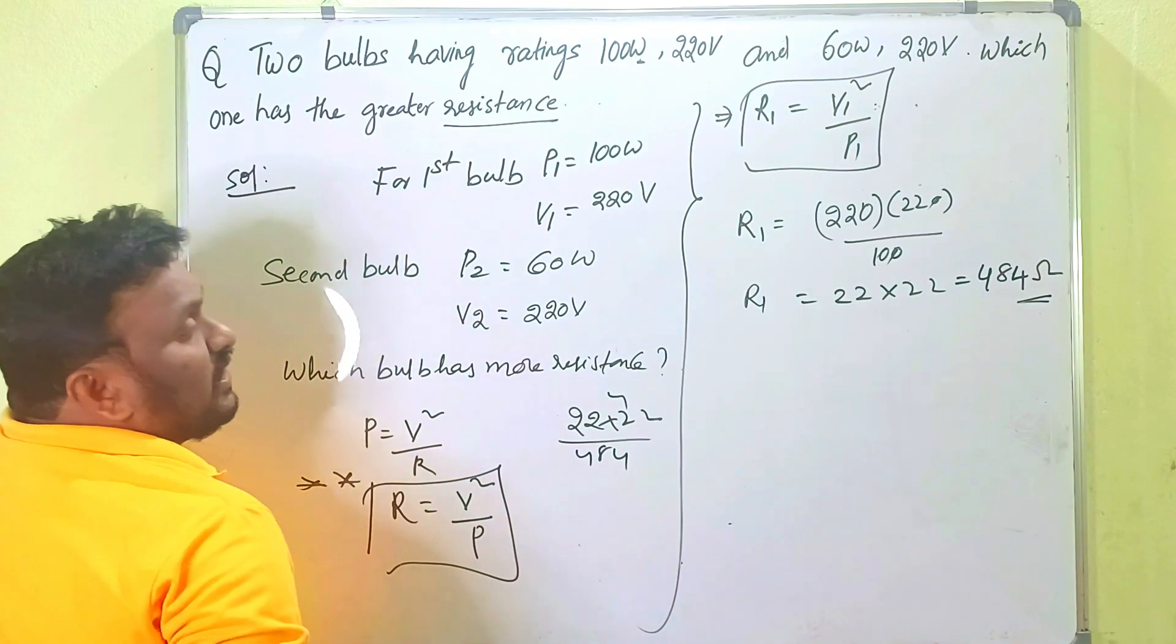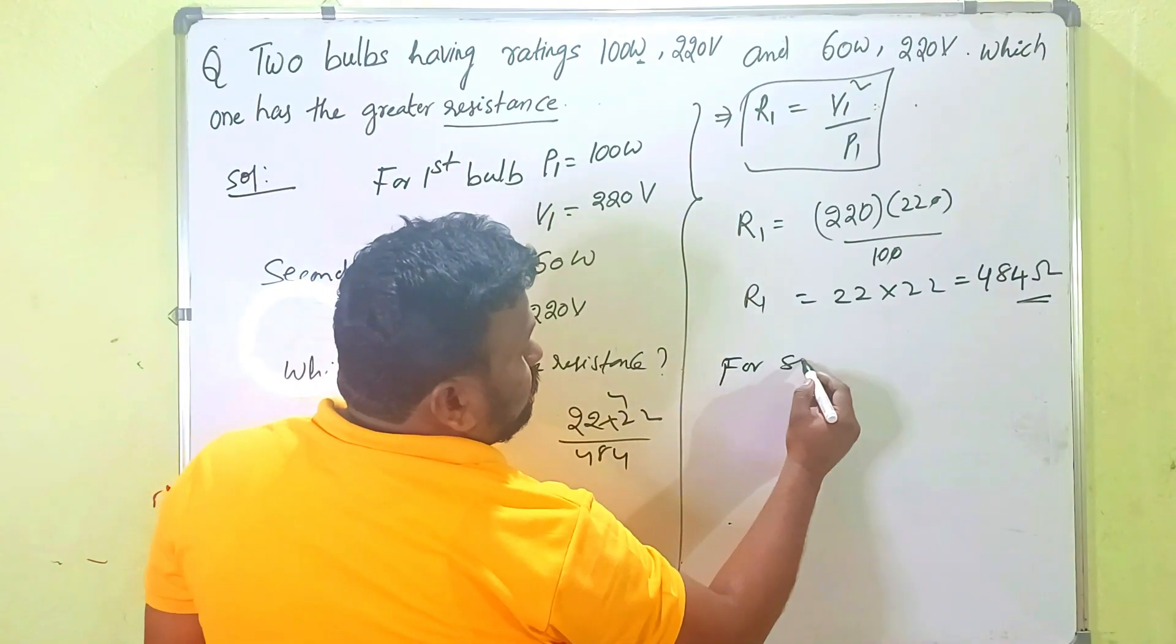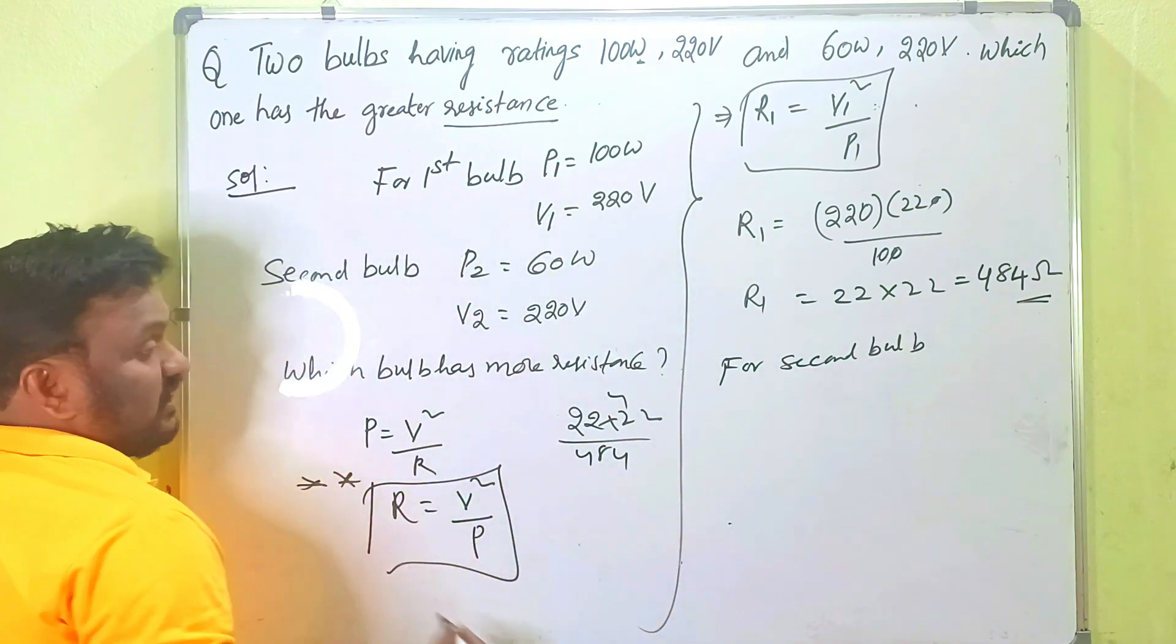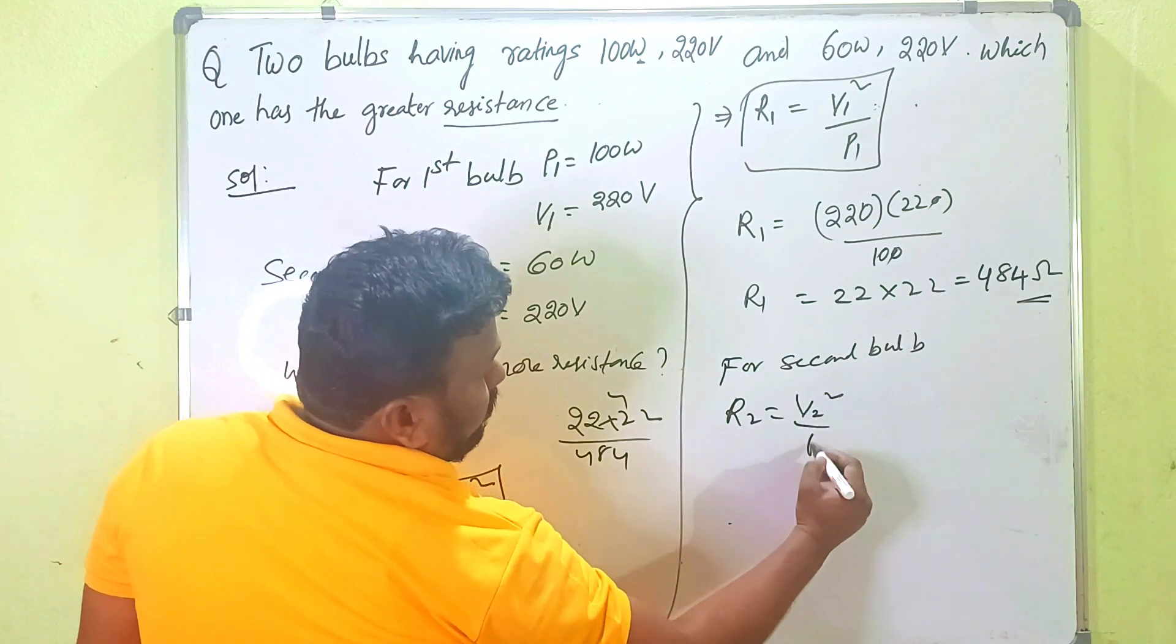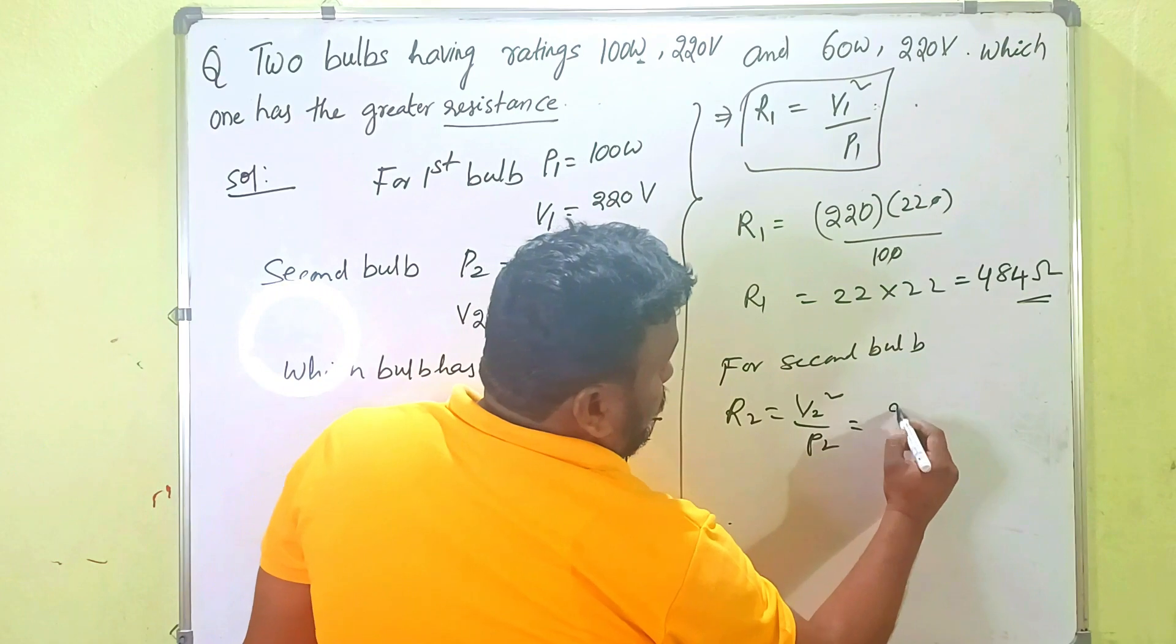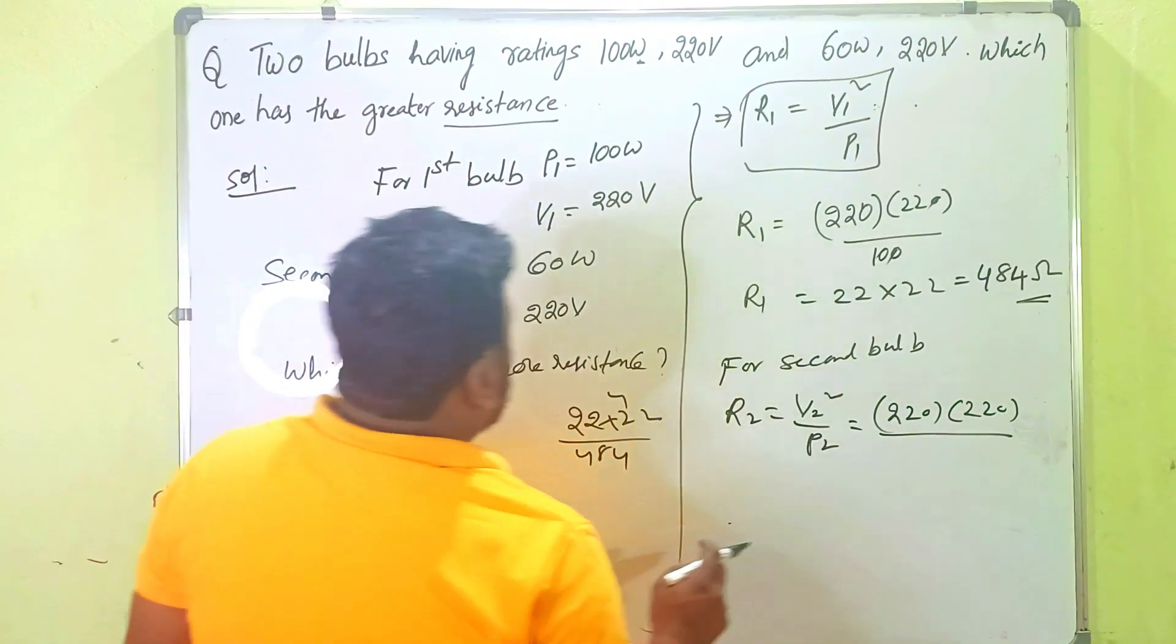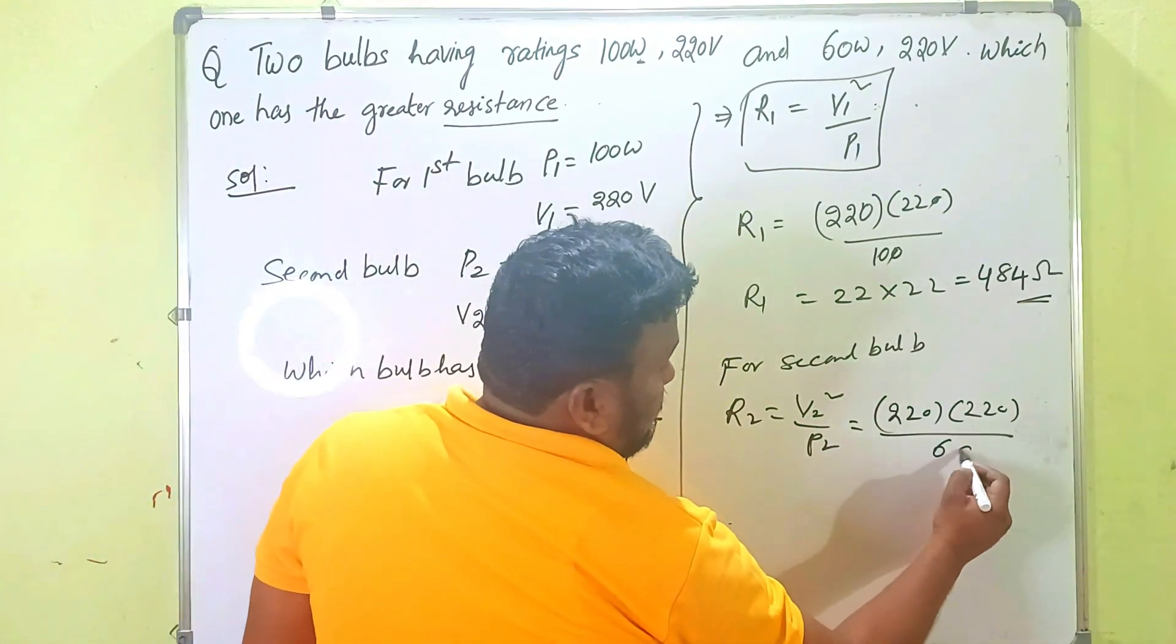In the same manner, for second bulb, again same formula here. R2 is equal to V2 square by P2. What is V2 again? V2 is 220. 220 over square means 220 into 220 by P2. What is P2? 60 watts. Zero zero cancel.